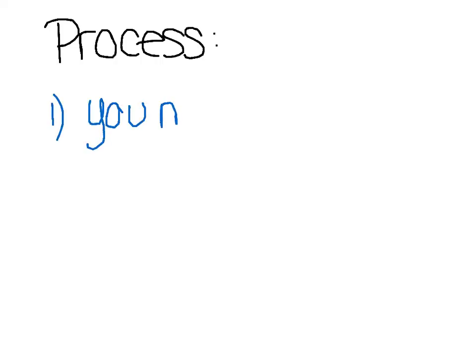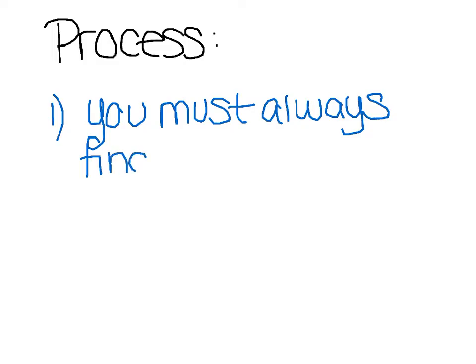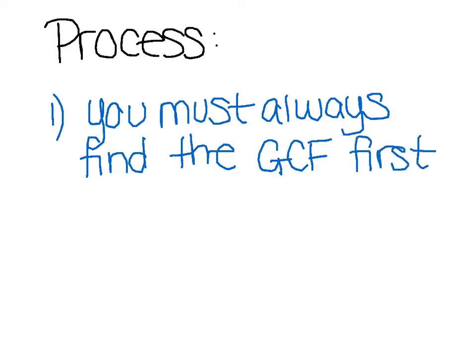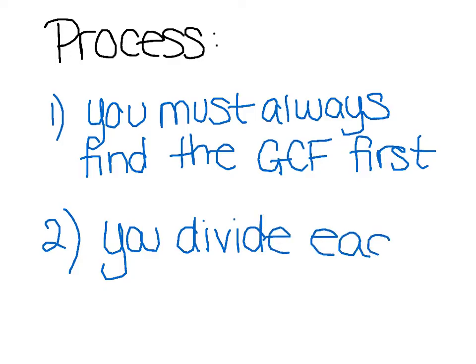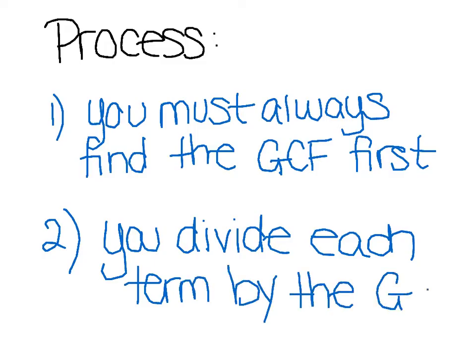There are two steps to factoring using the distributive property. Step one: you must always find the GCF first. Step two: divide each term by the GCF.